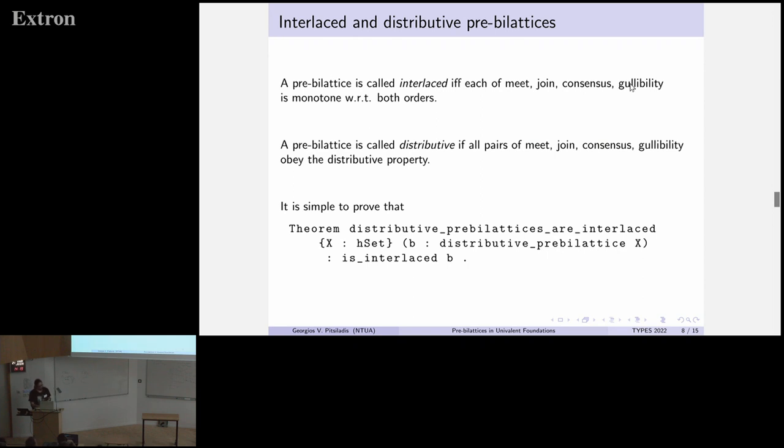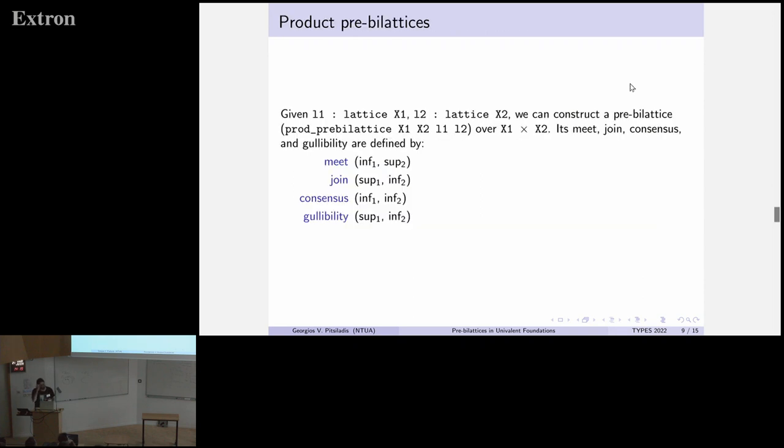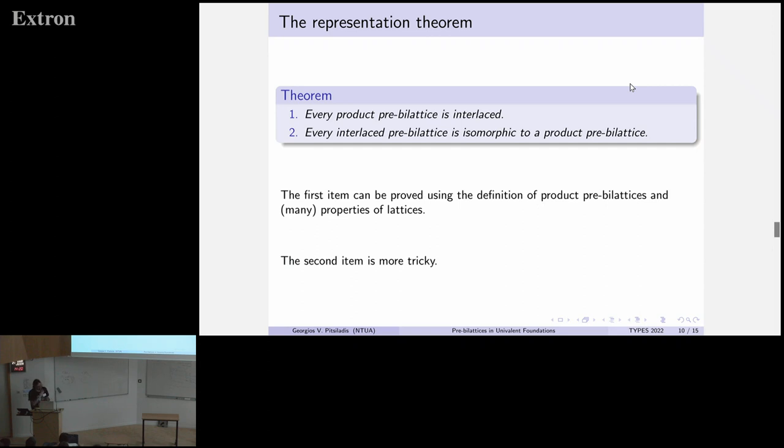The other notion, which is interesting and pertains to the rest of the talk, is the product pre-bi-lattice. There we have two different lattices over different sets. We can think of the first one as evidence for a claim and the second one as evidence against the claim. And then we can form the product pre-bi-lattice over the product, where the four operators are defined like this. Now, there is a theorem in pre-bi-lattices, the first big theorem. It says that every product bi-lattice is interlaced, which is easy to prove in Unimath, although a little cumbersome.